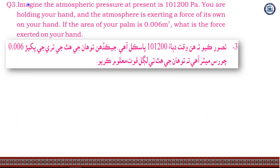Question 3: Imagine the atmospheric pressure at present is 101,200 Pa. You are holding your hand and the atmosphere is exerting a force on your hand. If the area of your palm is 0.006 square meters, what is the force exerted on your hand?